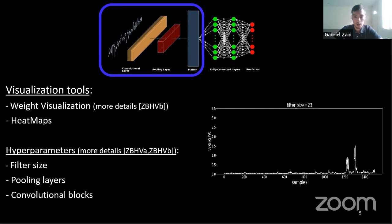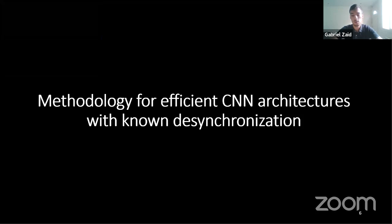Once we understood how these parameters affect point of interest detection, we generated a new methodology and a new convolutional part design to first reduce the complexity of the convolutional part, and then limit the effect of desynchronization. Let's look at a brief example to understand the methodology.